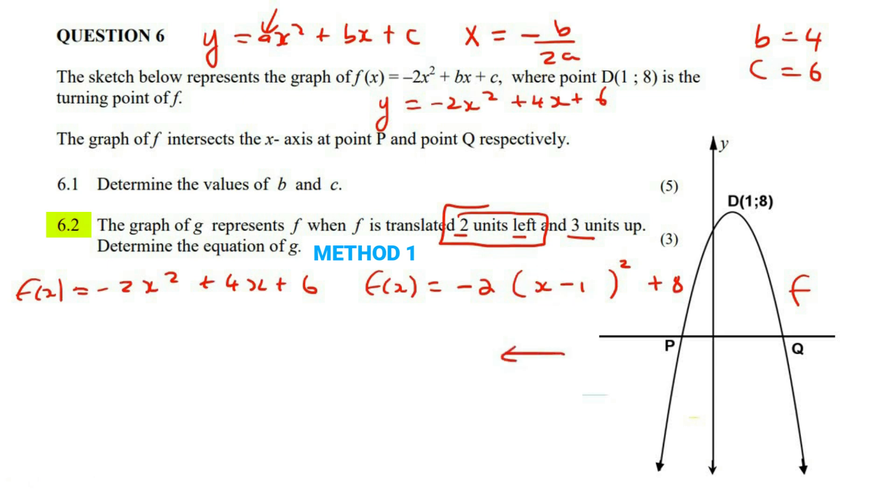Now when you go left, that means plus. So you are going to say that g of x is going to be negative two, x minus one. Now when you go left, you go plus.